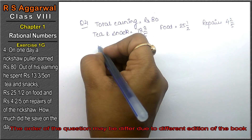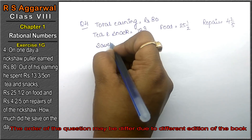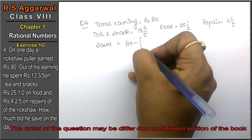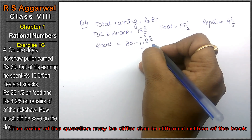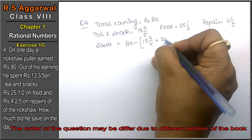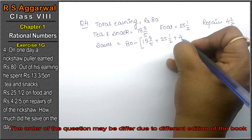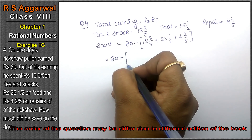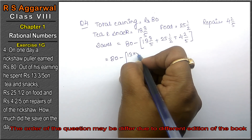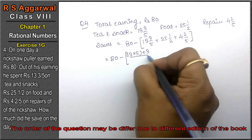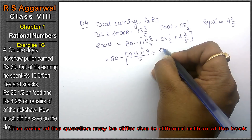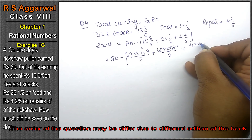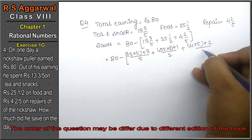Now we have to find out his savings. Savings equals total earning minus all expenses. So: 80 minus (13 and 3/5 + 25 and 1/2 + 4 and 2/5). Converting mixed numbers: 80 minus [(13×5 + 3)/5 + (25×2 + 1)/2 + (4×5 + 2)/5], which gives 80 minus [68/5 + 51/2 + 22/5].